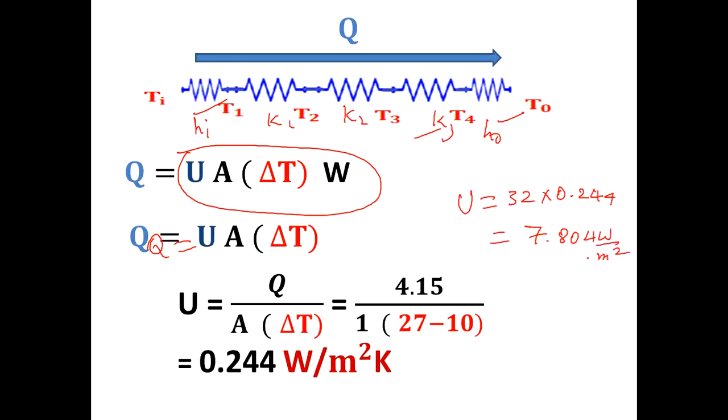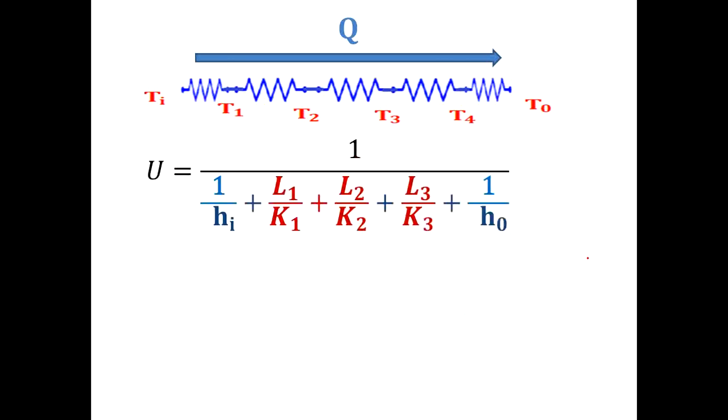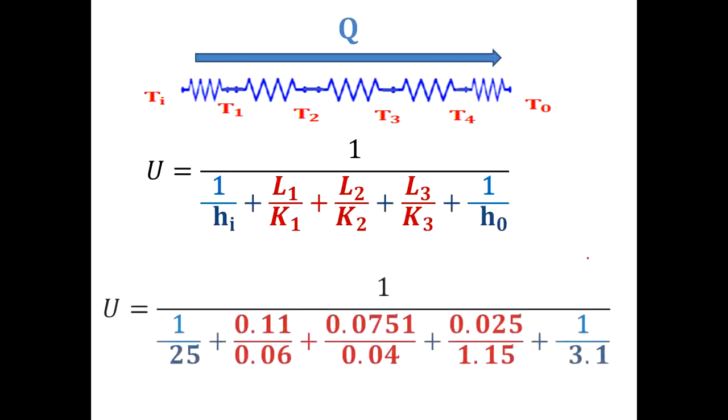Write down all these things, pause the video and write down. Overall heat transfer coefficient can also be calculated like this: U equals 1 divided by (1/h_i + L1/K1 + L2/K2 + L3/K3 + 1/h_o). You will get U equals 0.436. Calculate for 32 meter square: U equals 0.436 into 32, the value is 13.952 watt per meter square Kelvin.